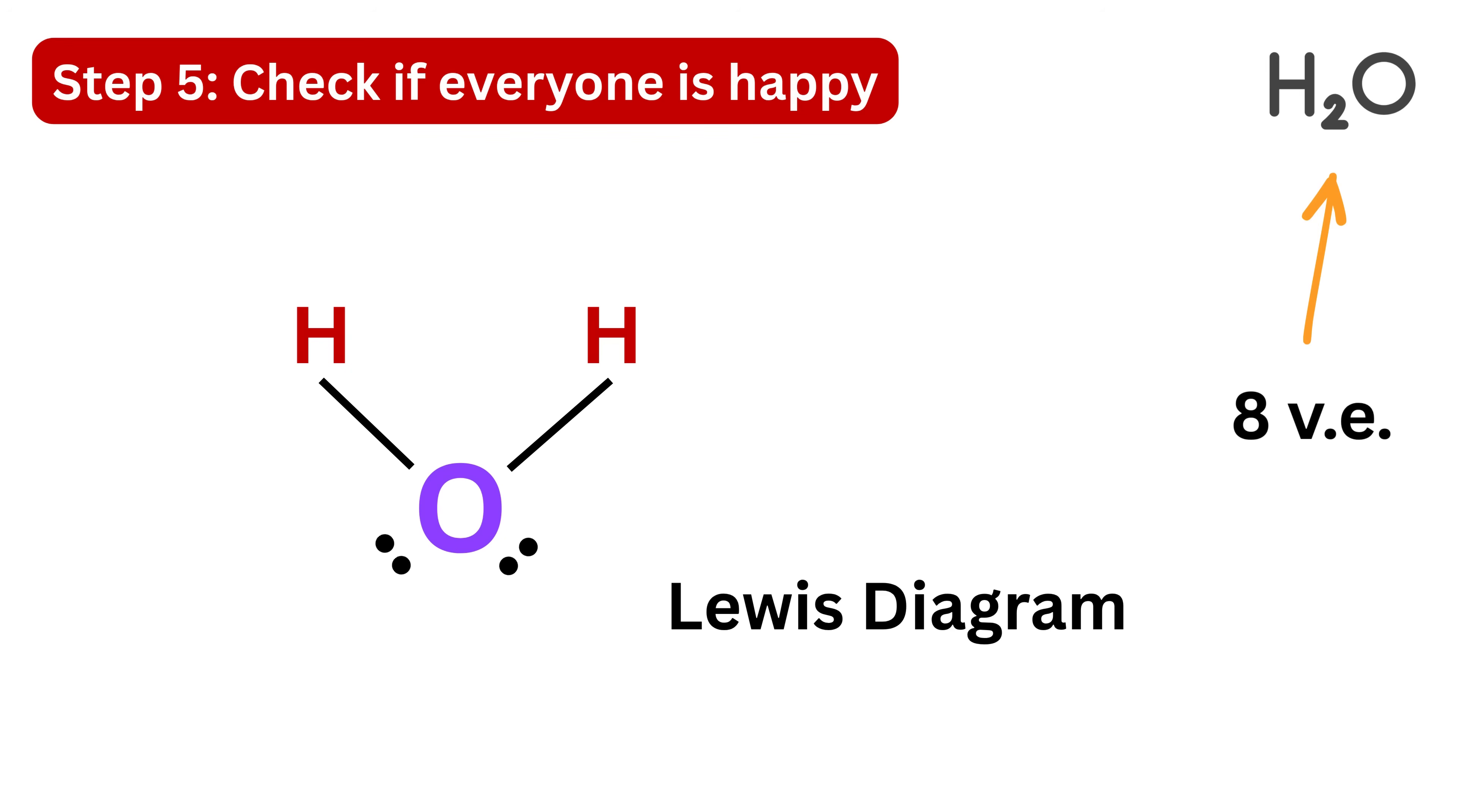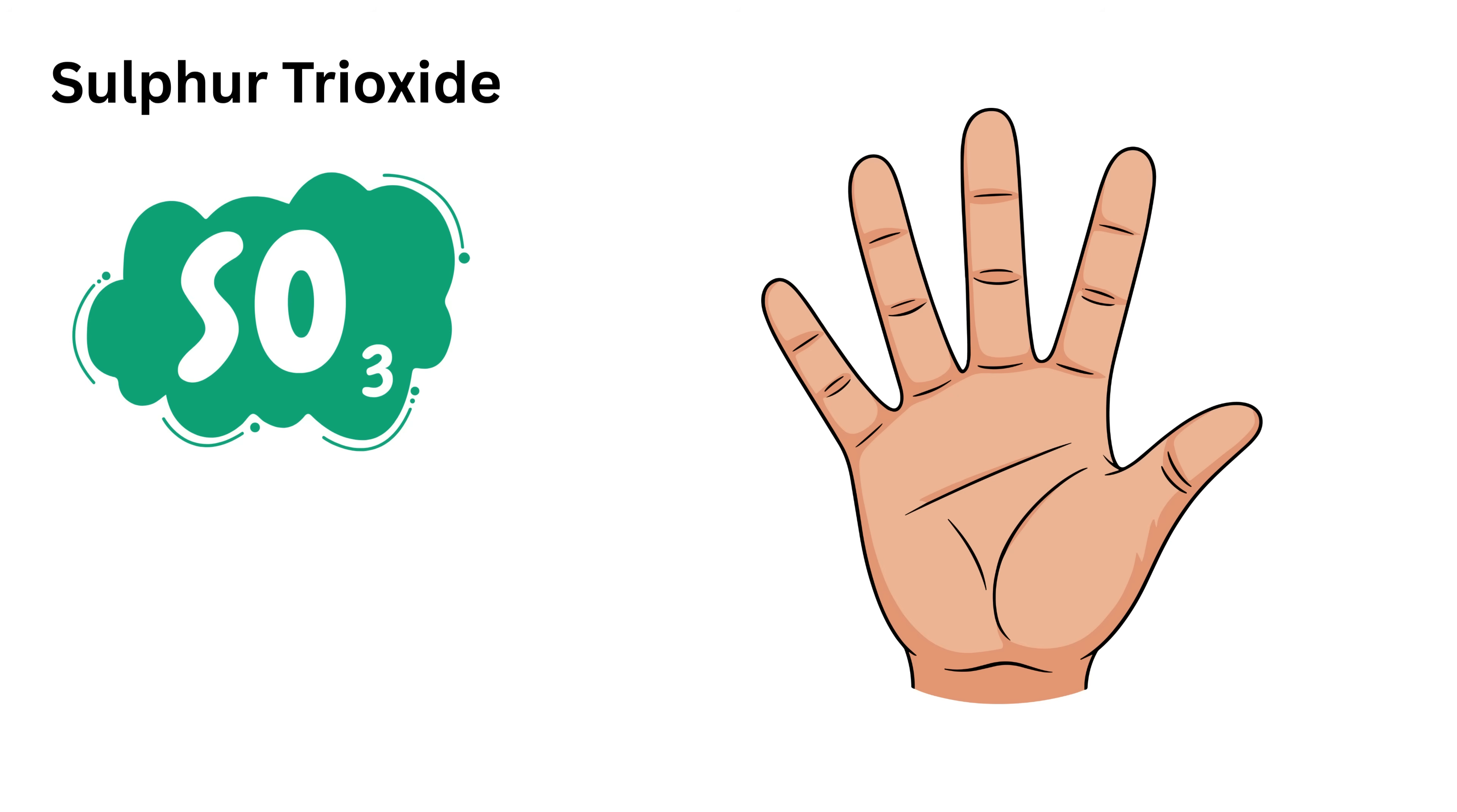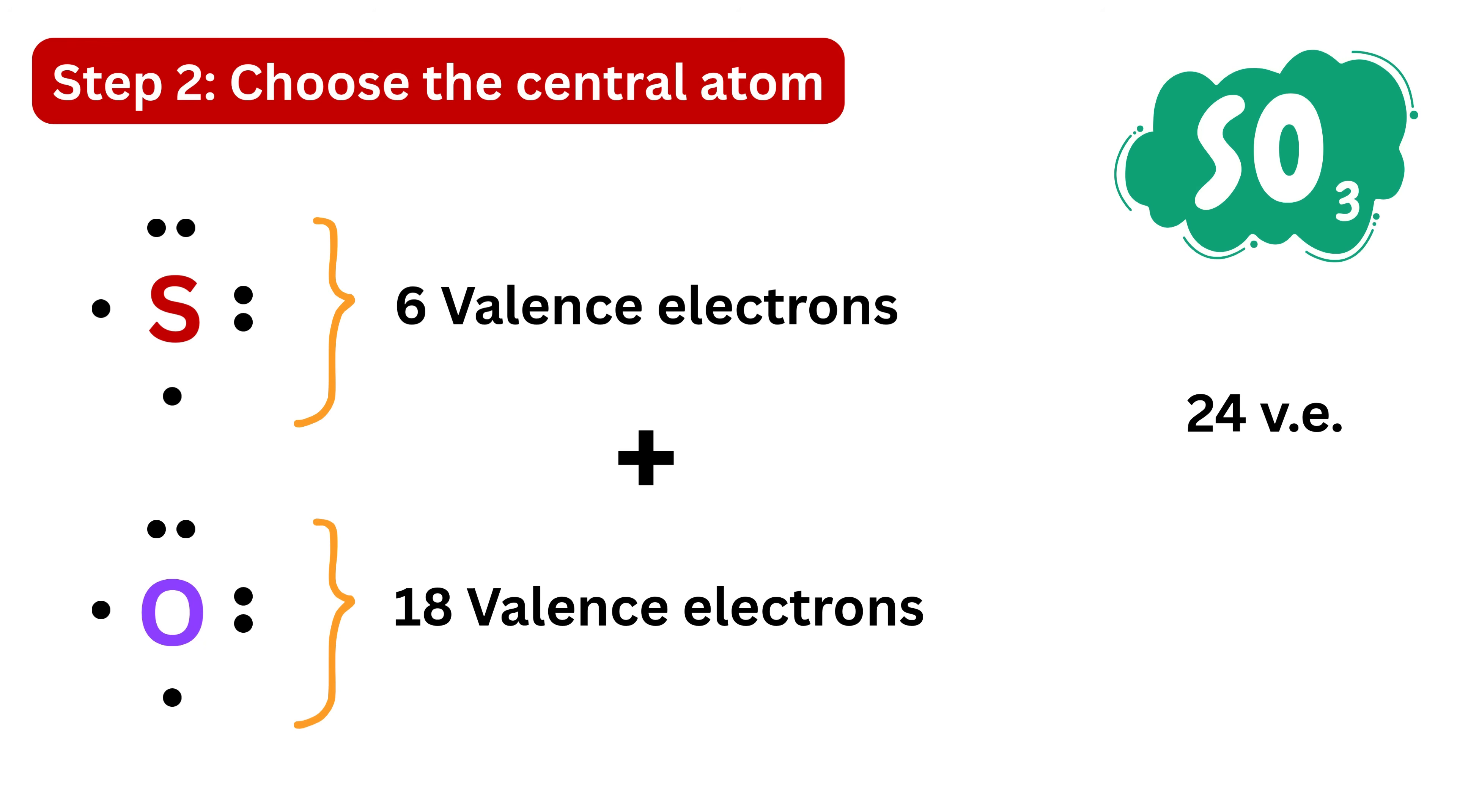Let's now try something a bit more complex: sulfur trioxide, written as SO₃. Don't worry, the process is exactly the same—just follow the five steps. In step one, count the valence electrons. Sulfur has six valence electrons. Each oxygen also has six valence electrons, and since there are three oxygens, that makes 18 from oxygen. Add six from sulfur and 18 from oxygen to get a total of 24 valence electrons. Step two is to choose the central atom. There's only one sulfur atom, so that becomes the central atom. Write sulfur in the center and arrange the three oxygens around it.